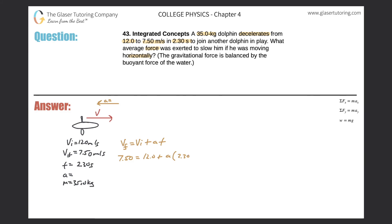Now just do some math. Subtract 12 from both sides. So 7.5 minus 12, what do we get? Negative 4.5. Negative 4.5 equals 2.30 times the acceleration.